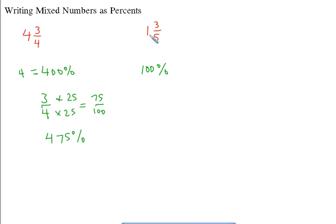This is going to be 100%, but 3 over 5—remember we could just change this into a decimal. 5 goes into 3 how many times? It goes in 0 times, but then it goes in 0.6 times. So I'm going to move it over to 100% by moving it over two spaces. So 1, 2, and we have 160%. And that's all there is.